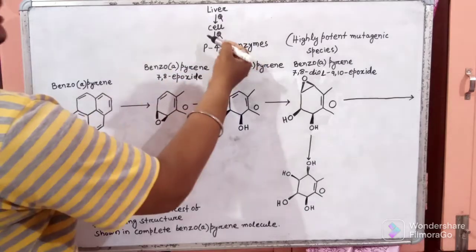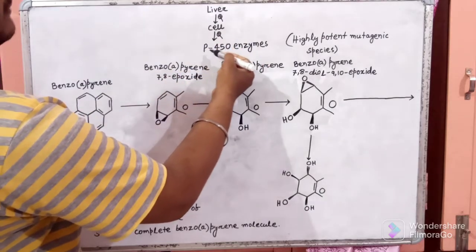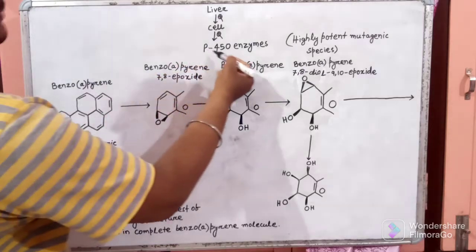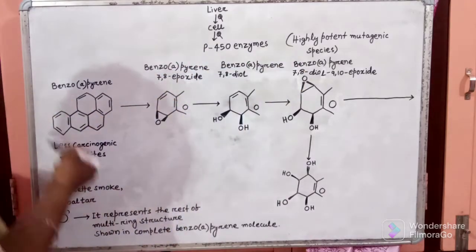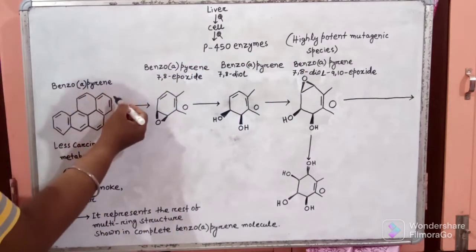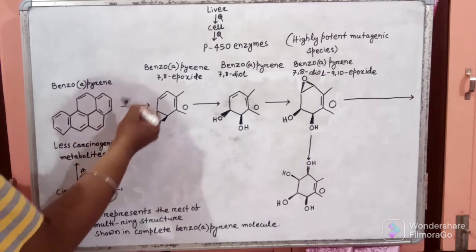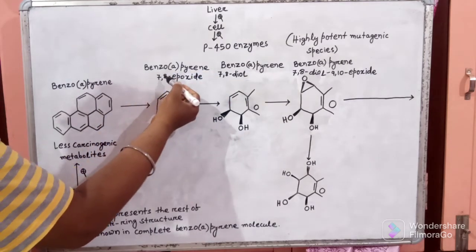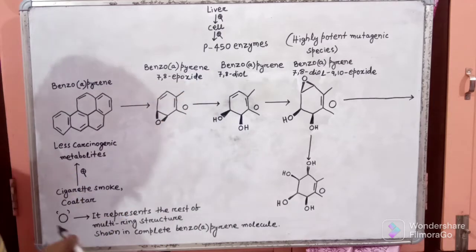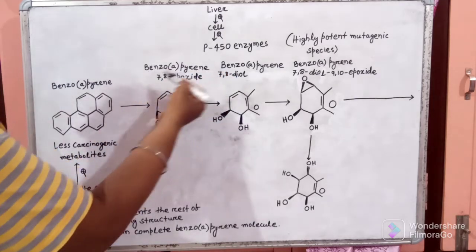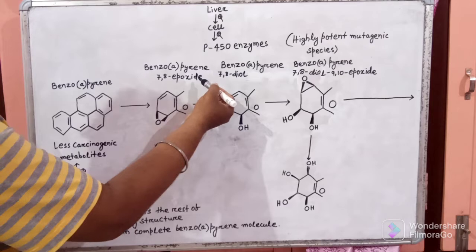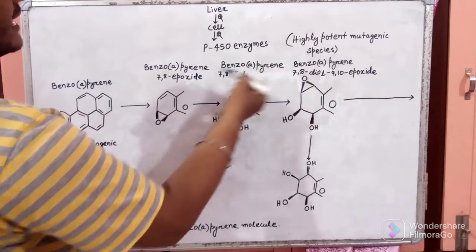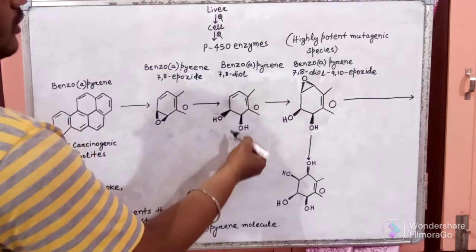The liver cell contains P450 enzymes. In the presence of P450 enzymes, Benzo A Pyrene is converted into Benzo A Pyrene 7,8 Epoxide. This Benzo A Pyrene 7,8 Epoxide is then converted into Benzo A Pyrene 7,8 Diol.